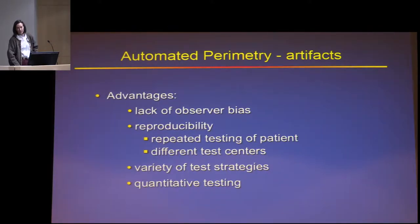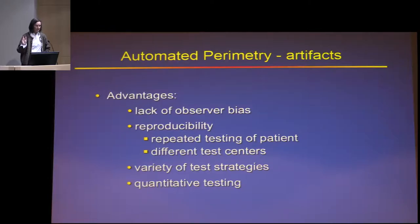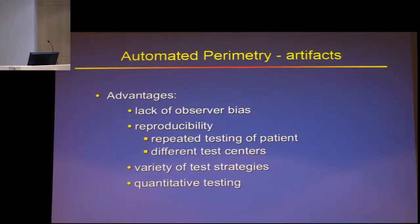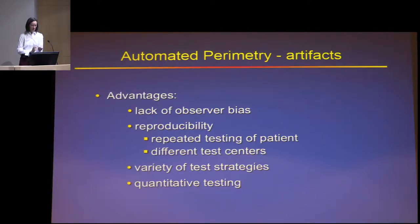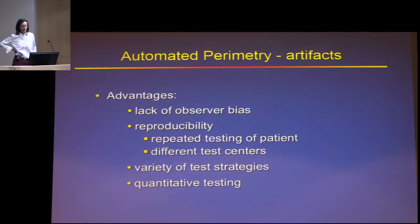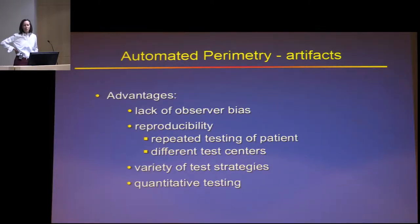The advantages of automated perimetry include lack of observer bias — a Goldman visual field, in experienced hands, can be made to show almost any defect you think it should. Humphrey perimetry doesn't have those pretest biases. It's very reproducible, and almost everybody in the country has a Humphrey. The main alternative is the Octopus, which is a very nice test but unfortunately the color printout doesn't fax well at all.